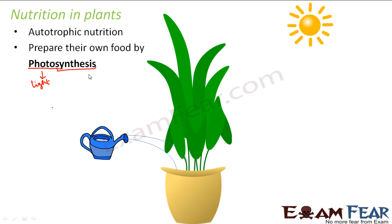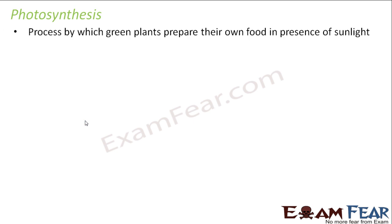That process is known as photosynthesis. In this topic, we are going to talk about what food they prepare and how they prepare that food — what exactly are the things needed by the plant. From the name photosynthesis, we can see that it needs sunlight. It also needs water, and another very important thing it needs is chlorophyll. So process by which green plants prepare their own food in presence of sunlight is known as photosynthesis.